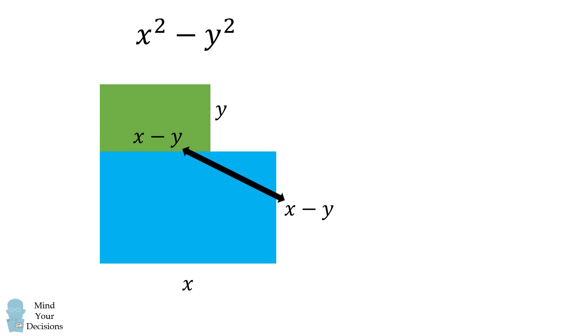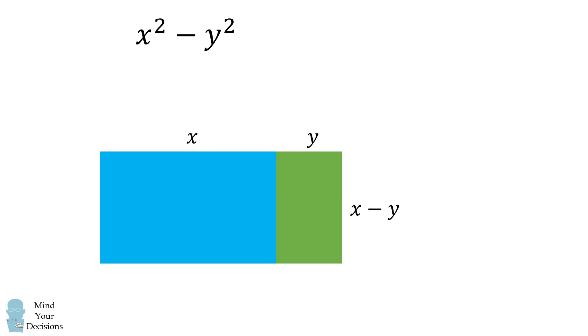We can join the two sides that have length equal to x minus y. We will then get a larger rectangle, where one side is equal to x minus y, and the other side is equal to x plus y.